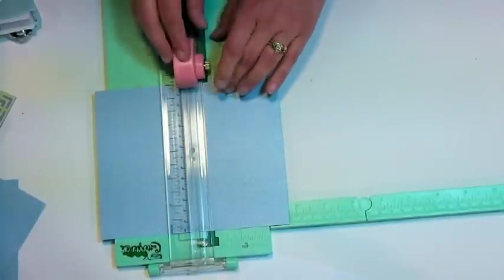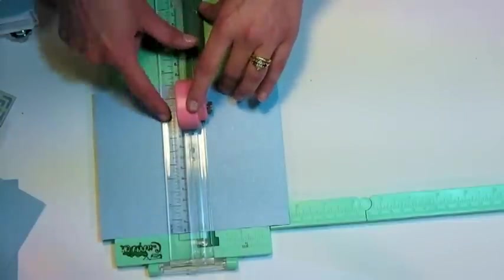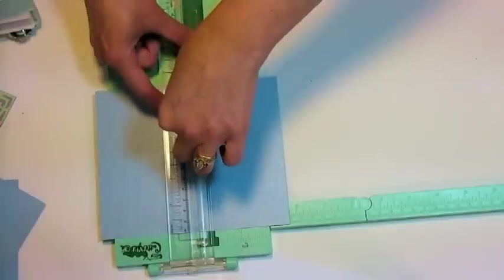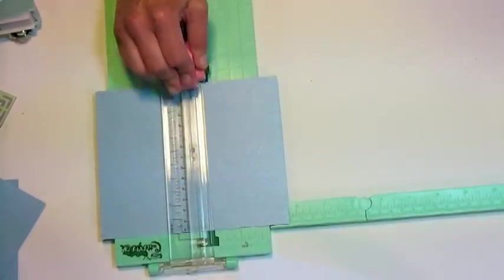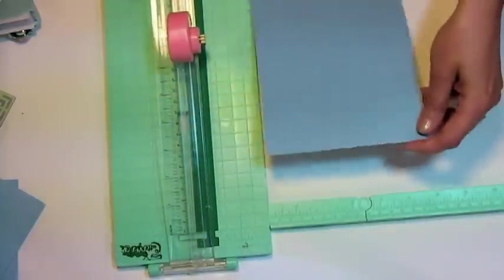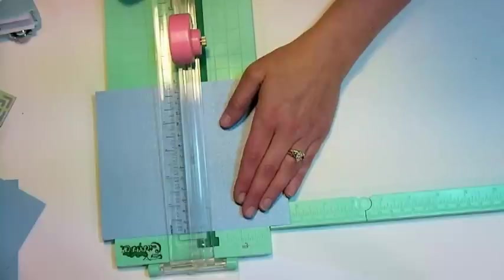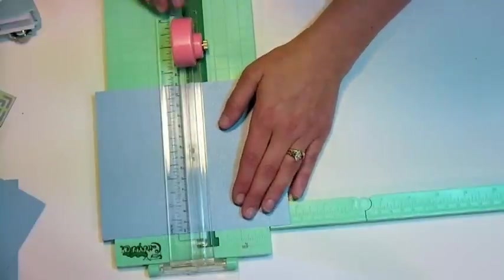And then I'm going to drag down to the bottom of my paper and go up one and a quarter inches. I'm actually going to put my marker on that and then score down, and then I'm going to flip my paper over and do the exact same thing to the other side. This is a symmetrical card, so you're going to do the same thing to each side.